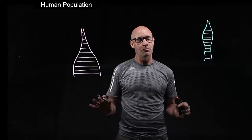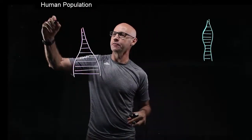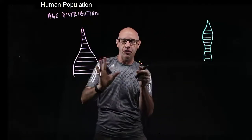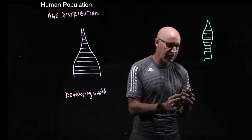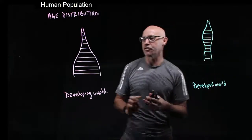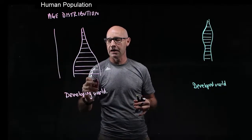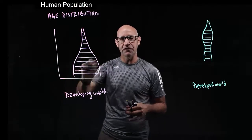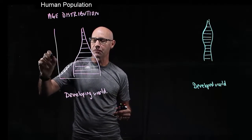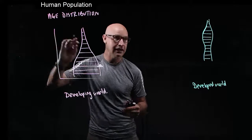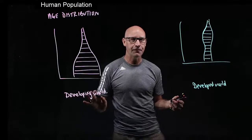In our last video about human population, I described the story of the age distribution and described the two extremes of the developing world and other countries in the developed world. The classic shape in the developing world — each of these stripes is the age bands, showing childhood, then working age, then old age — we can see the same thing here as well, but there's a big difference in the shape.